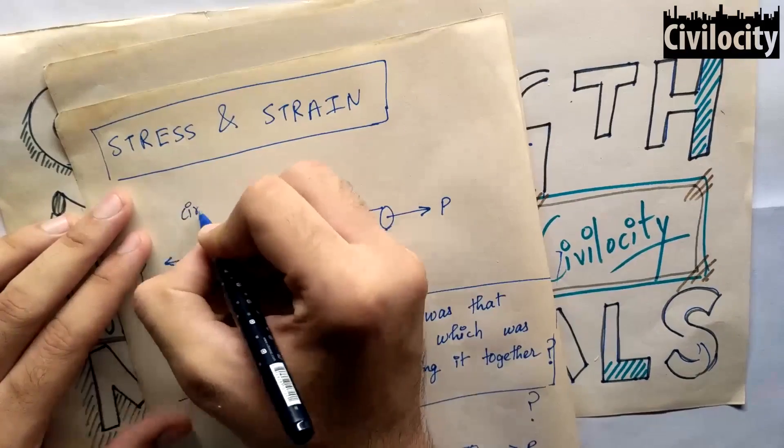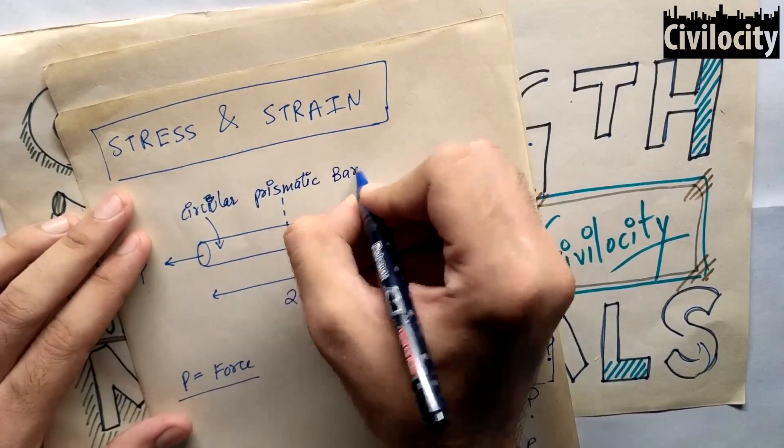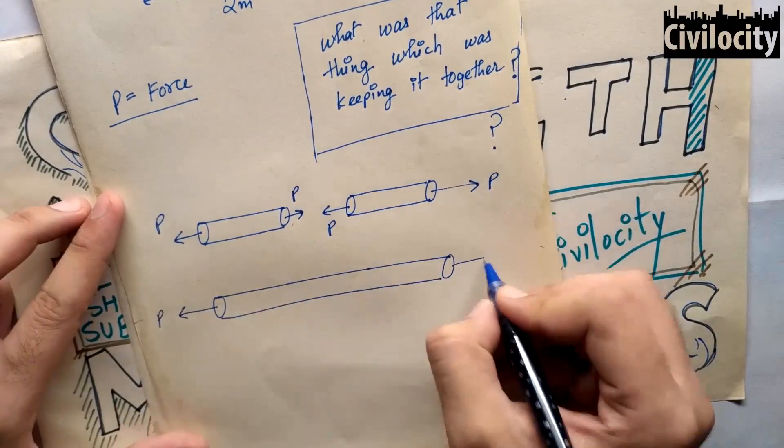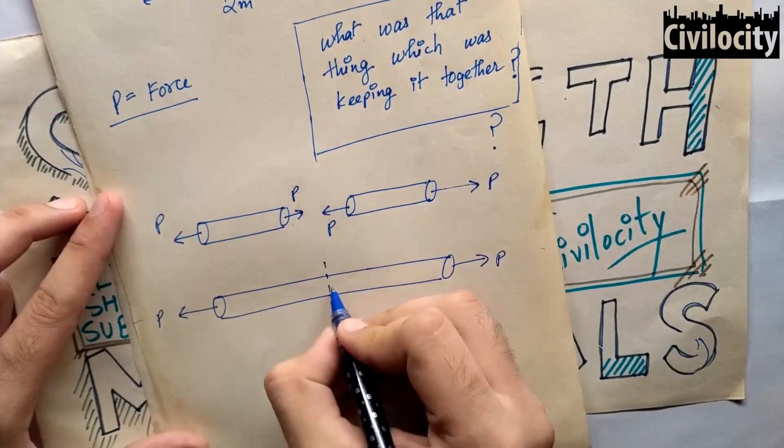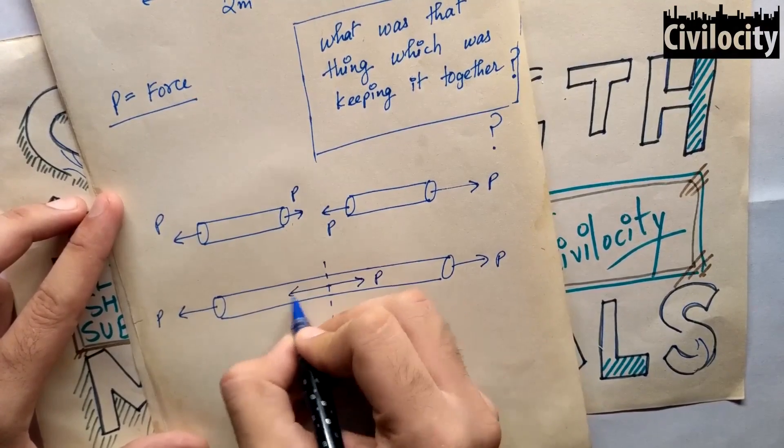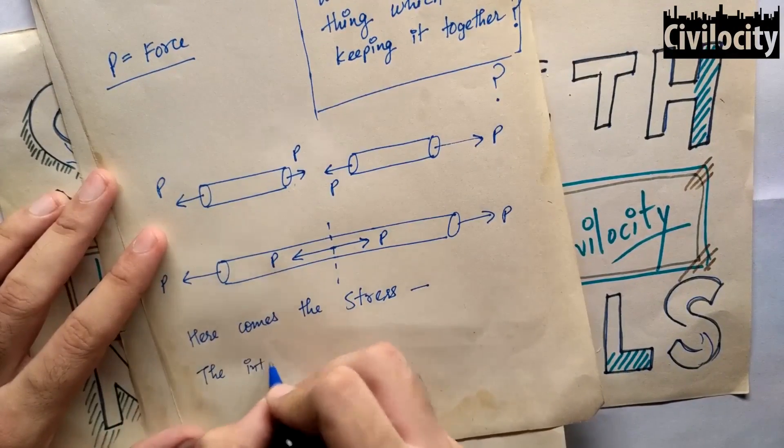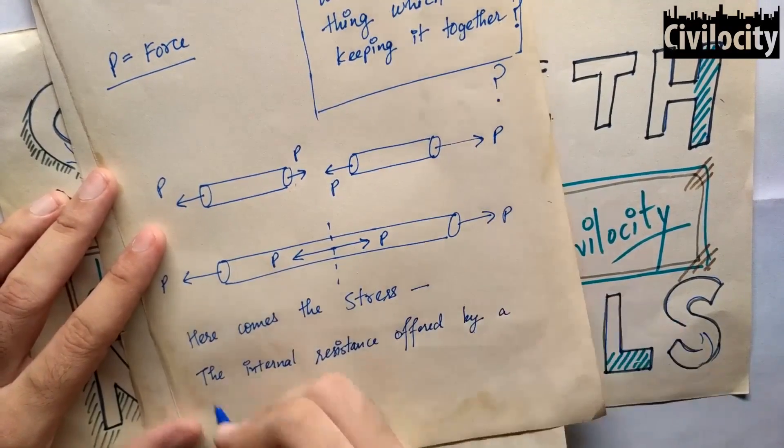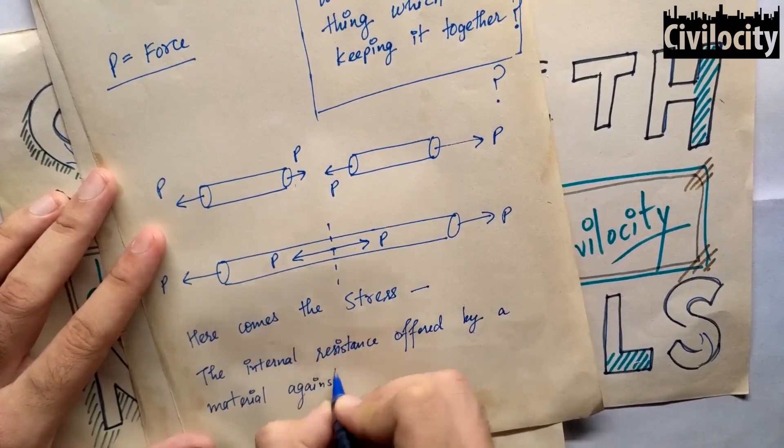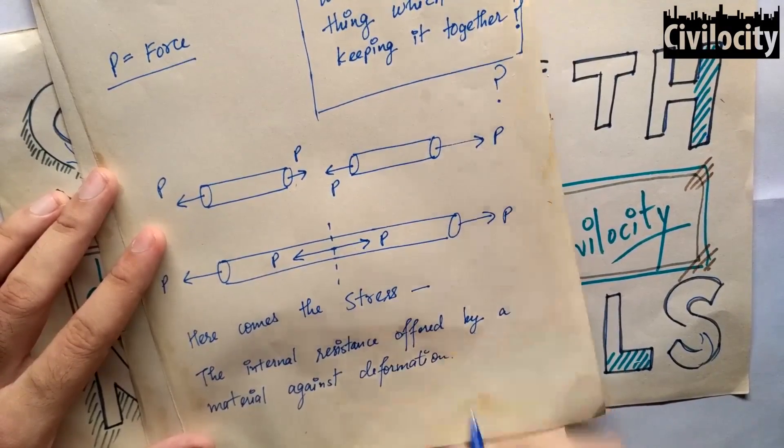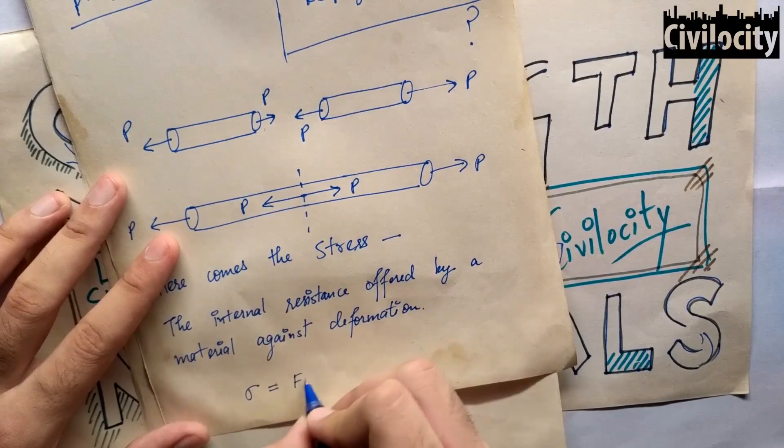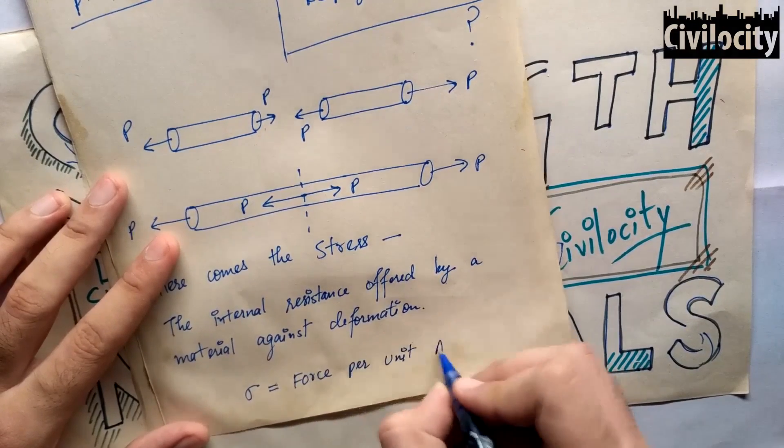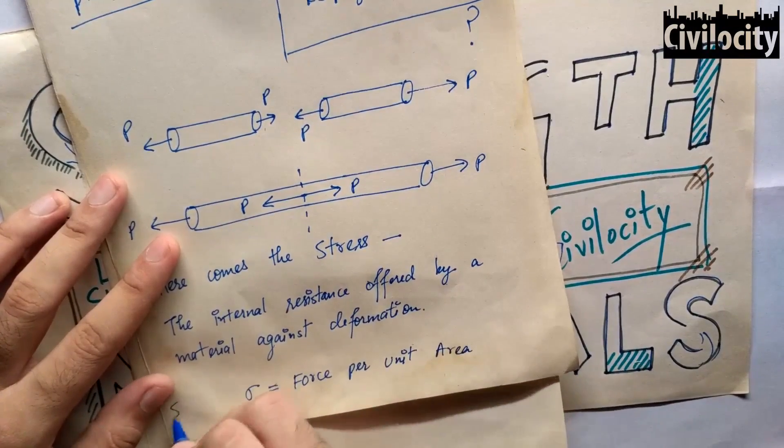The intensity of force, that is force per unit area, is called stress. So stress can be defined as the internal resistance offered by a material against deformation, which is force per unit area. This stress can be tensile or compressive, depending upon the nature of the load, and is represented by this word sigma.